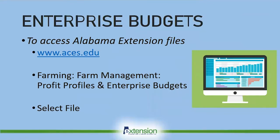Each horticulture file generally follows the same format. To find the files, visit aces.edu, click on the topic of farming and farm management. Under this section, you will find profit profiles and enterprise budgets. Click on the enterprise budget you'd like to look at.